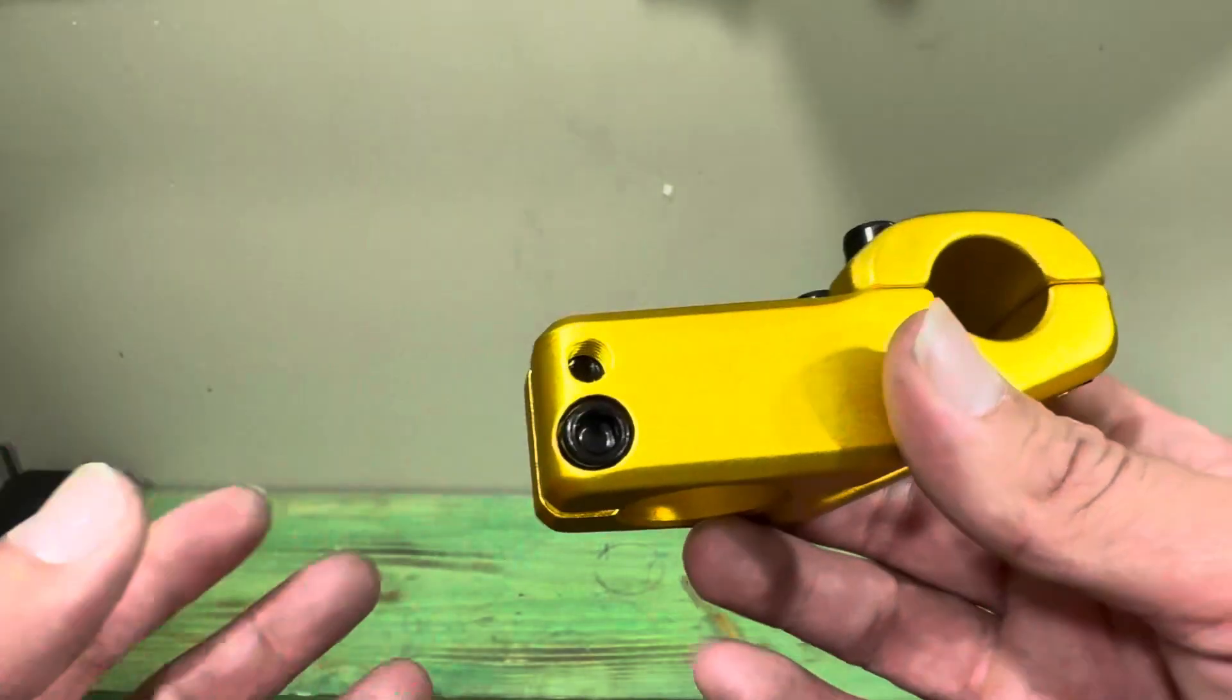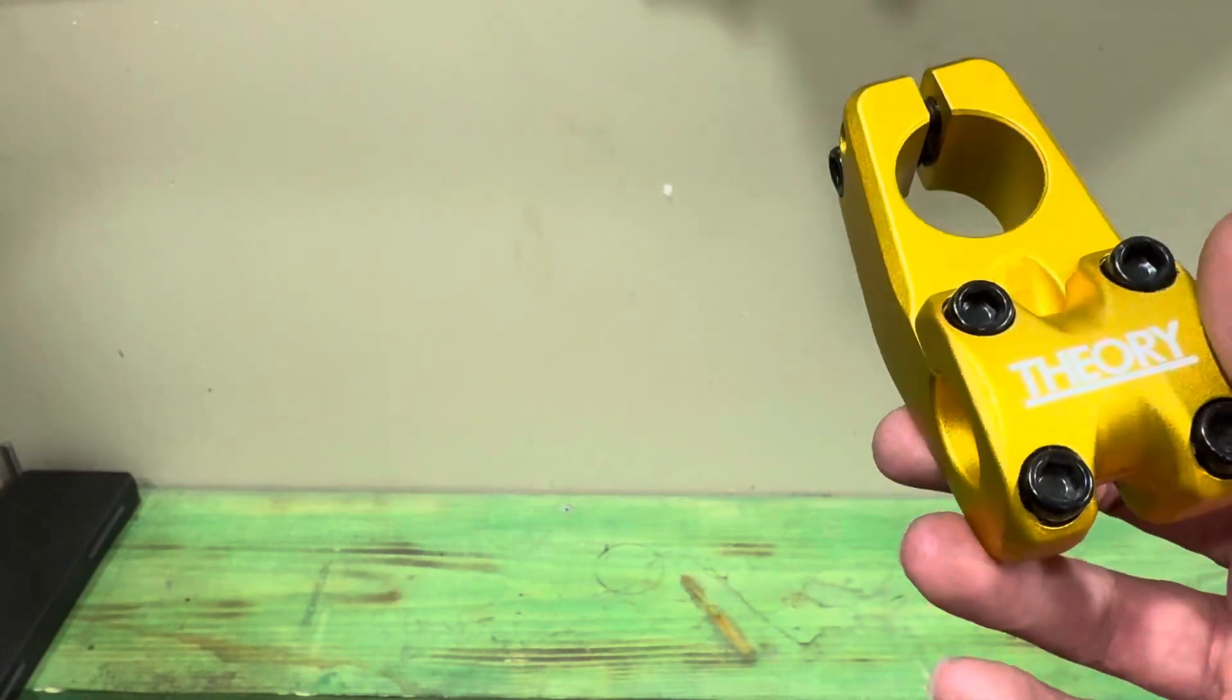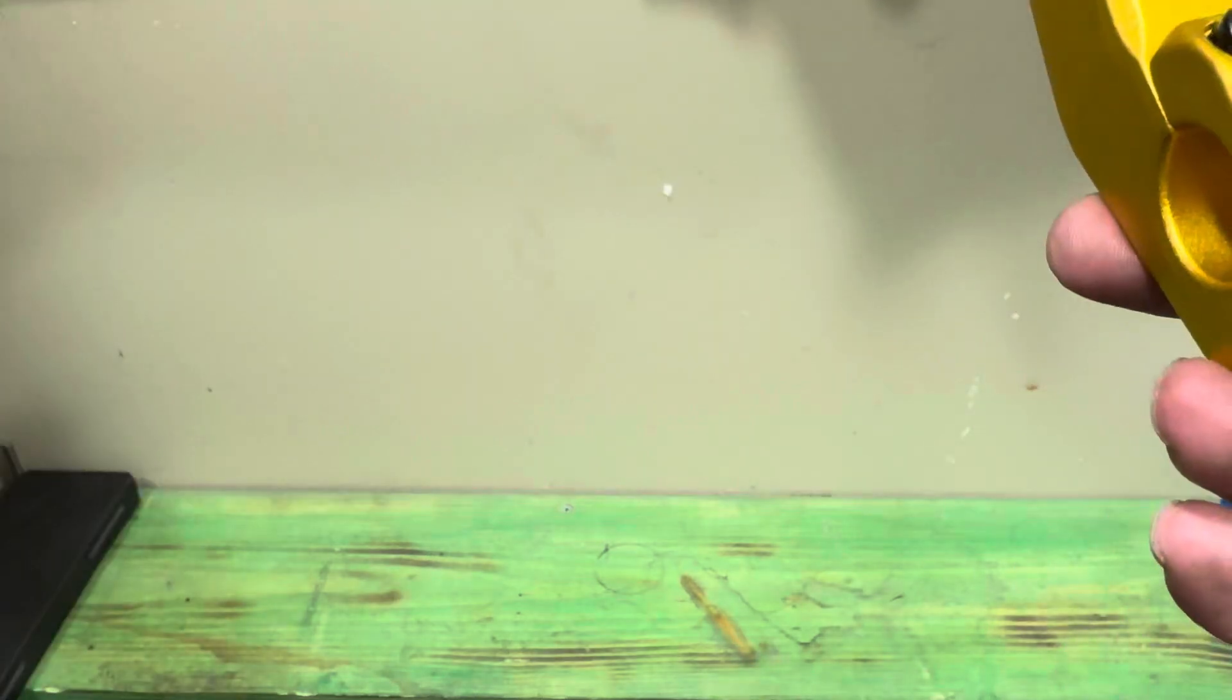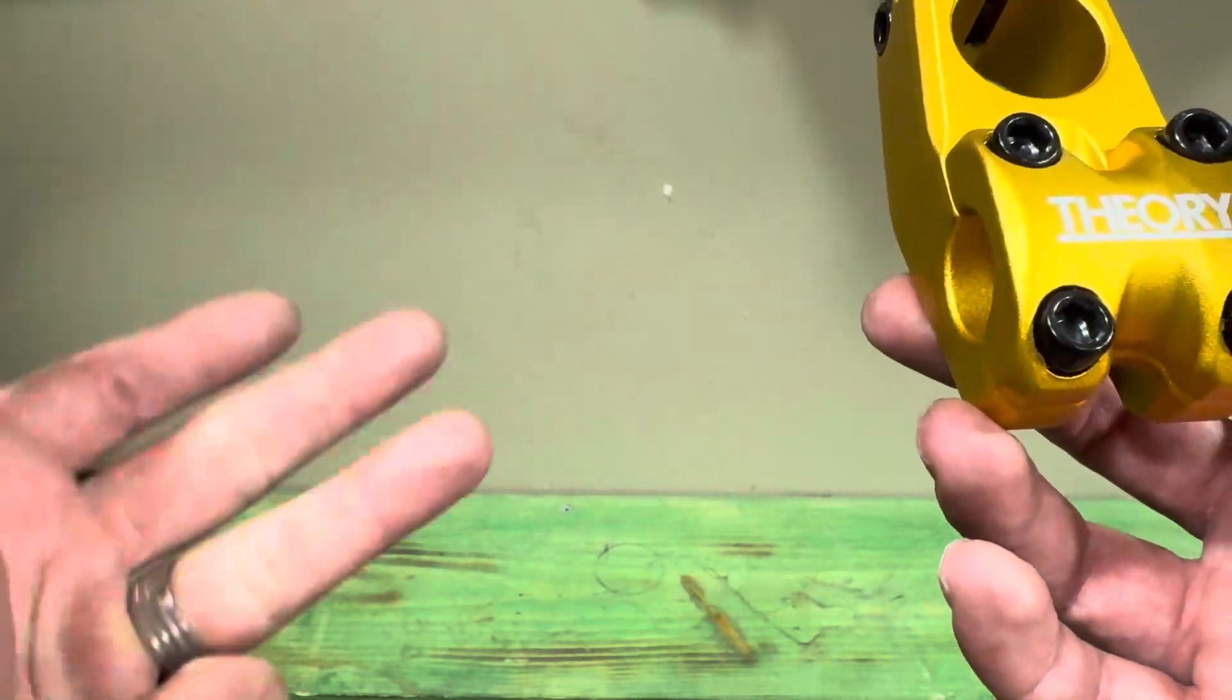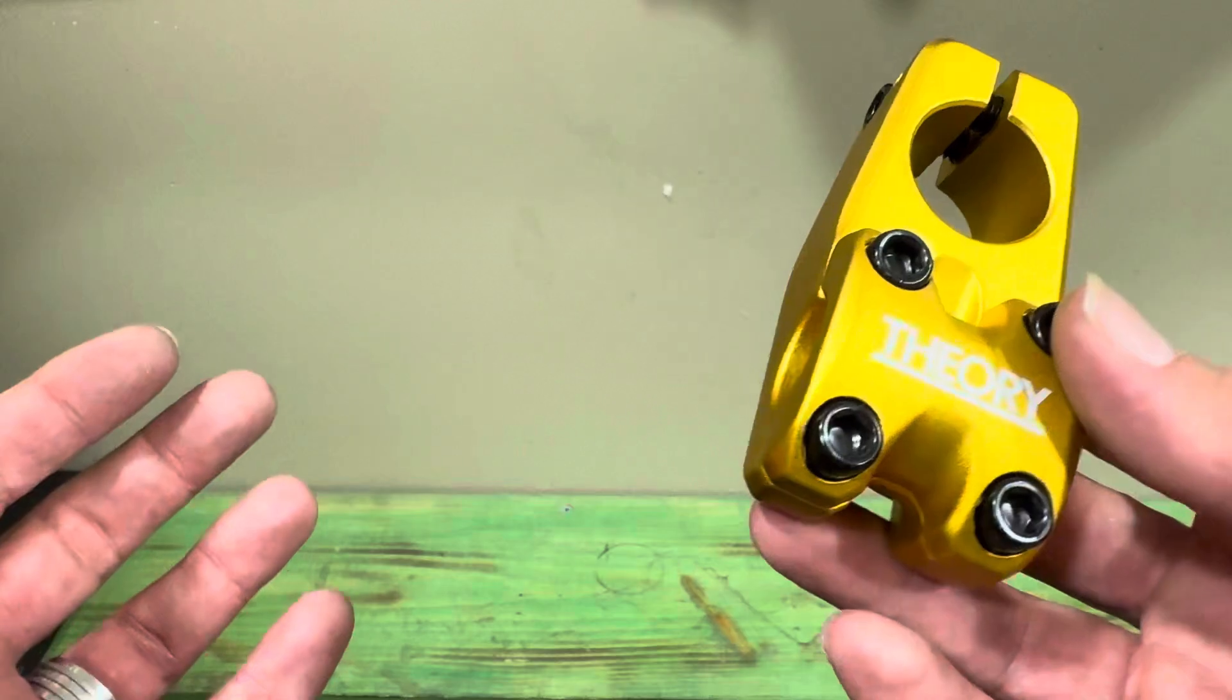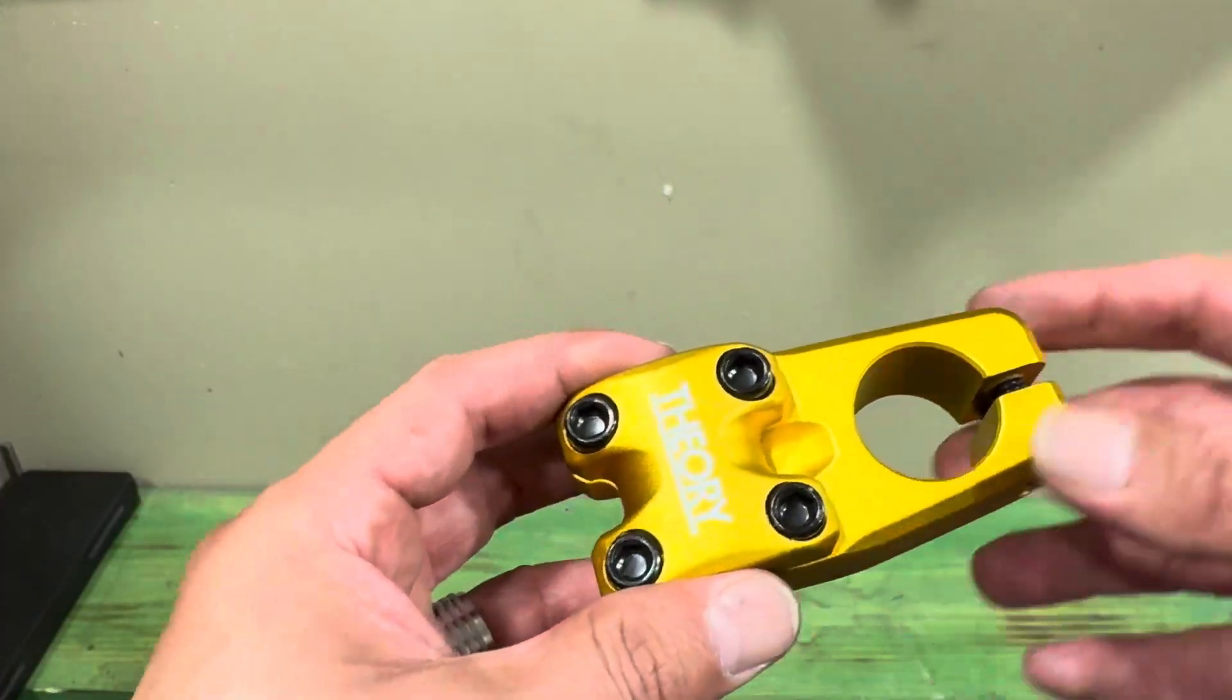This stem is available in multiple different colors as well as limited edition colors. The colors that they usually come out with or have are black, polished, red, blue, gold, purple, and then they have other colors that they bring in limited edition. So if you want a good quality stem at a reasonable price, definitely check out this Theory Bond stem.